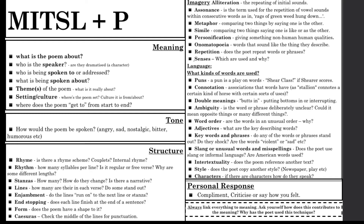Let us move on to structure. We're looking at the structure of the poem: your rhyme — is there a rhyme scheme, any couplets, an internal rhyme? We're looking at the rhythm: how many syllables per line? Is it regular or free verse? Is it in stanzas? Are there different line lengths? Do we have any examples of end-stopping, where each line finishes at the end of a sentence? Do we have enjamblement — do the lines run on to the next line or stanza? Do we have any example of caesura, which is where there's a punctuation mark in the middle of a line creating an extended pause?